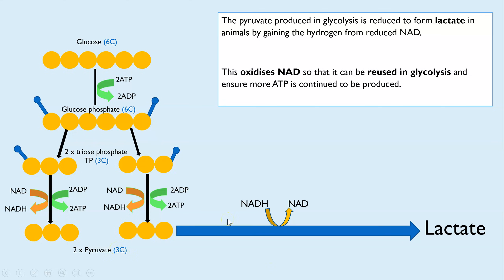This can't go on indefinitely because lactate is an acid and it will eventually start to denature enzymes. So anaerobic respiration cannot occur forever, but it does mean that even in the absence of oxygen for a short period of time you can still make small amounts of ATP. The key reason we convert pyruvate to lactate is to re-oxidize NADH into NAD so that glycolysis can continue.